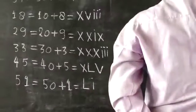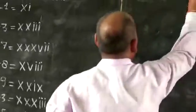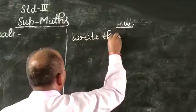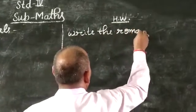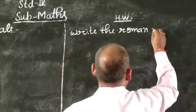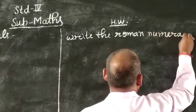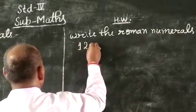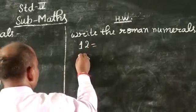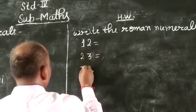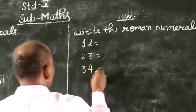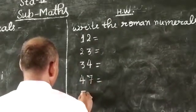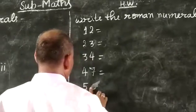Now, homework. Write the Roman numerals for: 12, 23, 34, 47, 56.